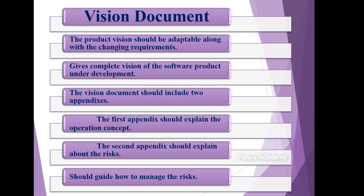The vision document should include two appendixes. The first appendix should explain the operation concept — how the product will operate. The second appendix should explain about the risk: what risks will be faced when using the product, and what risks are faced by the software development team while developing the product.